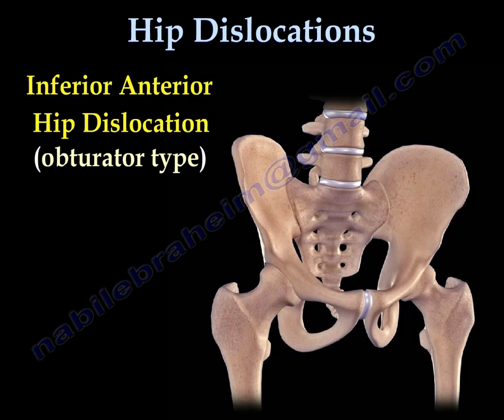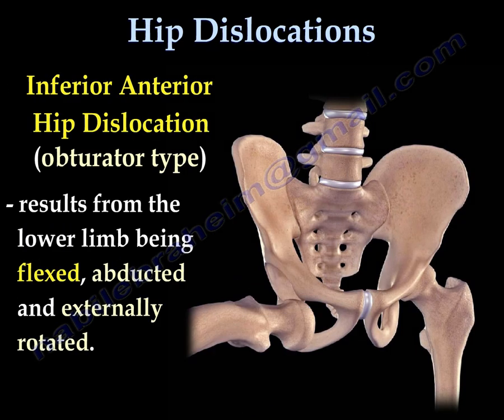This is an anterior inferior hip dislocation, called the obturator type. In this case, the lower limb will be flexed, abducted, and externally rotated.